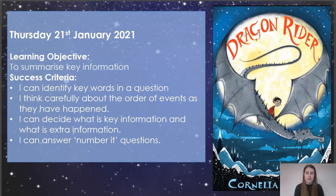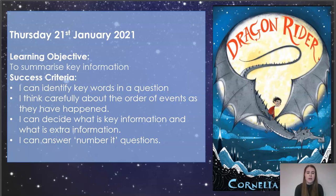Hello Year 5 and welcome to your next reading lesson for this week. Today we're going to look at summarising key information. Our success criteria is pretty much the same as it was before: looking at key words and the questions, thinking carefully about the order of events. It's important to know what's important information and what's not if we were to summarise something. And we're going to have a go at answering the numbered questions.